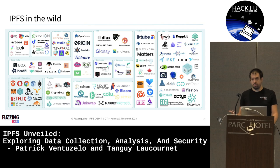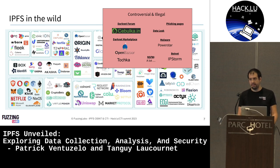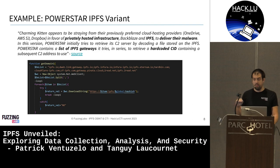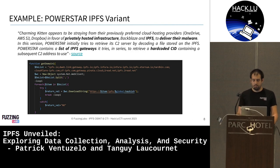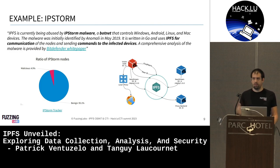IPFS is used by a lot of different projects. Most of them are blockchain related, but it's also used for controversial and illegal usage — darknet forums, darknet marketplaces, phishing pages, botnets, and so on. One good example is the PowerStar IPFS variant. In that piece of code, they are mentioning multiple IPFS gateways as a way to download IPFS content over HTTP, and they iterate or pick one of these domains. Similarly, IPStorm is a botnet that uses IPFS for communication, receiving C2 commands directly from the IPFS network.